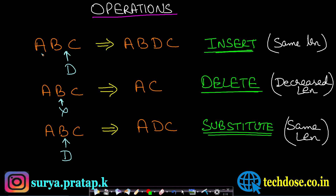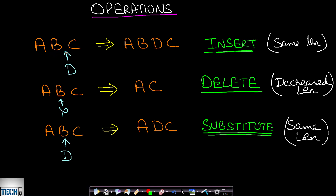The insert operation says that if you are having a string, let's say ABC, and we want to insert a character D between characters B and C, then the length of the entire string will increase by 1, and D will be inserted between B and C. This is the insert operation.